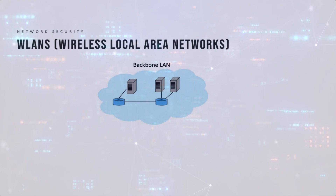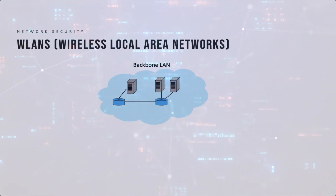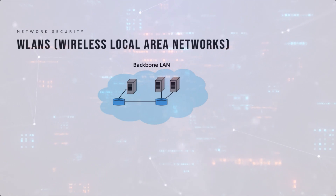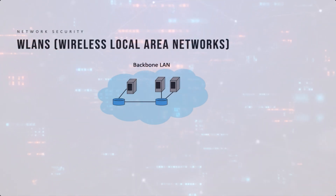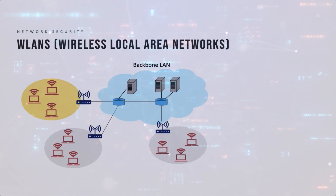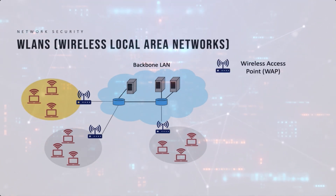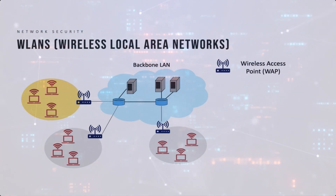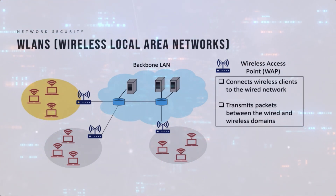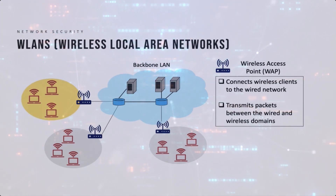A wireless local area network basically extends the corporate backbone LAN for users who are mobile. We install wireless access points at different locations which are connected to the backbone LAN. These wireless access points extend the coverage of the wired network to a bigger region, connecting wireless clients to the wired network and acting as the intermediary between the wireless and wired domains.